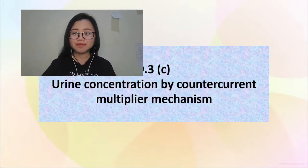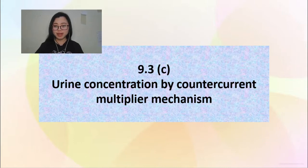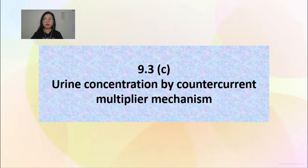Hello there, good morning, good afternoon, or good evening, whenever it is that you are watching this video. This is our fifth video in our video series for chapter 9. We are still in homeostasis and we're still talking about the kidney. This video is on 9.3c which is urine concentration by counter current multiplier mechanism. Fair warning: this video may be a little bit confusing, so you may need to go through it once or twice more.